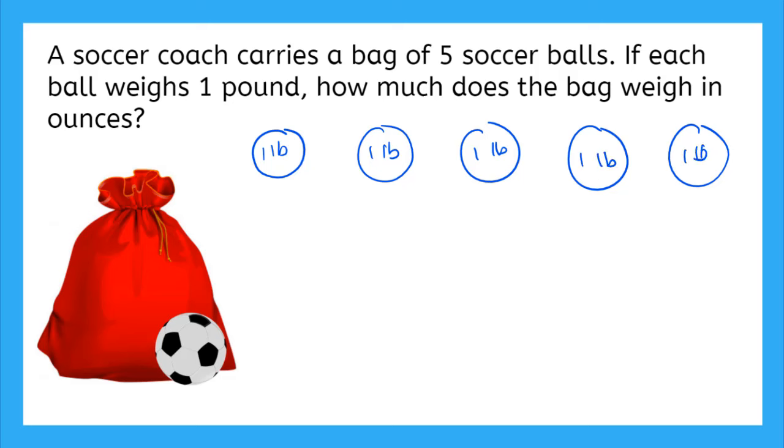And now what do we know about pounds? We know that one pound is equal to, yep, 16 ounces. So that means each of these balls weighs 16 ounces since they all weigh one pound. So if we want to know how much each of these balls weighs together, we would need to add 16 ounces together five times.